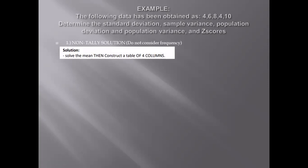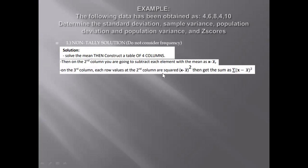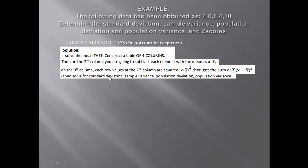Here are the steps for the solution. First, solve the mean and then construct a table of four columns. On the second column, subtract each element from the mean as x minus x-bar. On the third column, square each row's value from the second column, giving x minus x-bar quantity squared. Then get the sum as the summation of x minus x-bar squared. Then solve for standard deviation, sample variance, population deviation, and population variance. Lastly, solve for the z-score of each individual element at the fourth column.